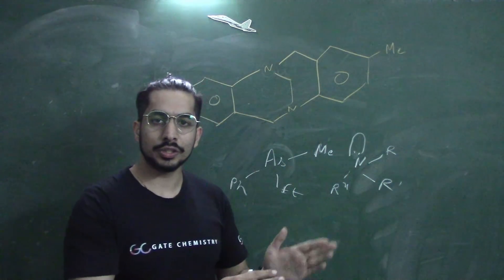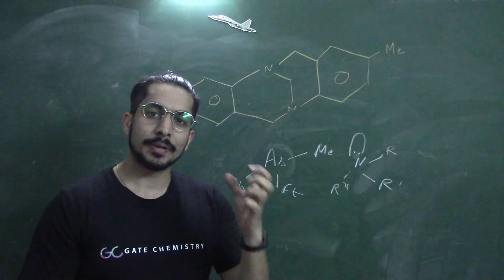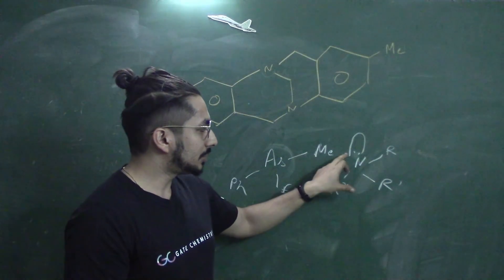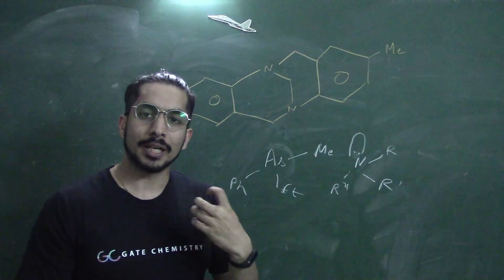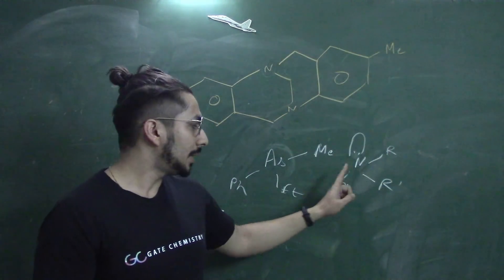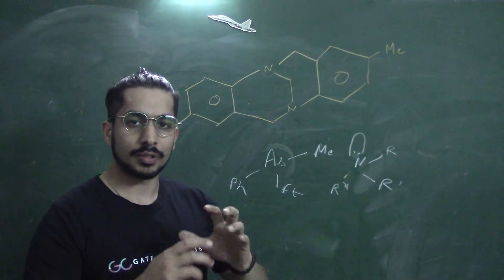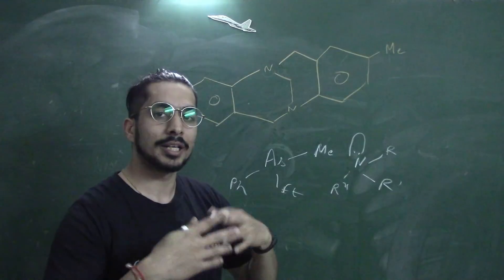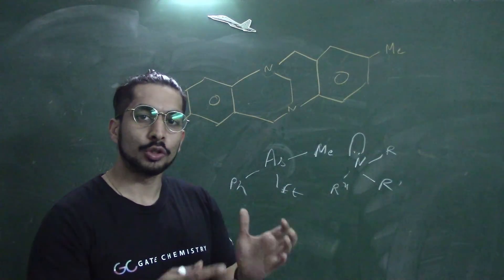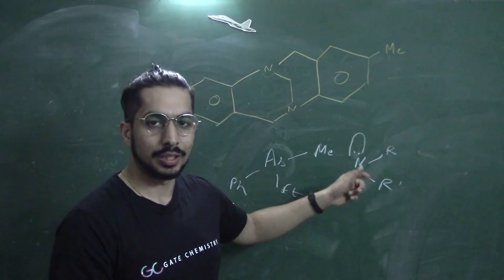But with nitrogen there is a special scenario — something called pyramidal inversion. Pyramidal inversion is when the lone pair rapidly oscillates. Because nitrogen's lone pair rapidly oscillates, we cannot isolate the molecule. In the case of arsenic and phosphorus, they are bigger atoms compared to nitrogen, so the lone pair oscillation — the pyramidal inversion — is very, very slow, meaning you can isolate one particular enantiomer. With nitrogen, that cannot happen.